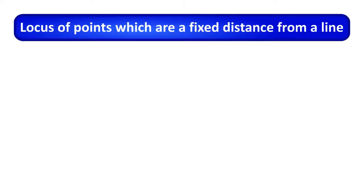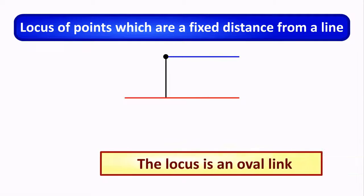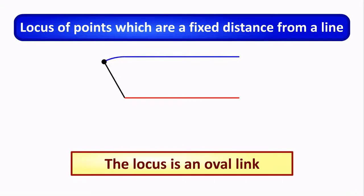The locus of points which are a fixed distance from a line forms an oval-like shape.